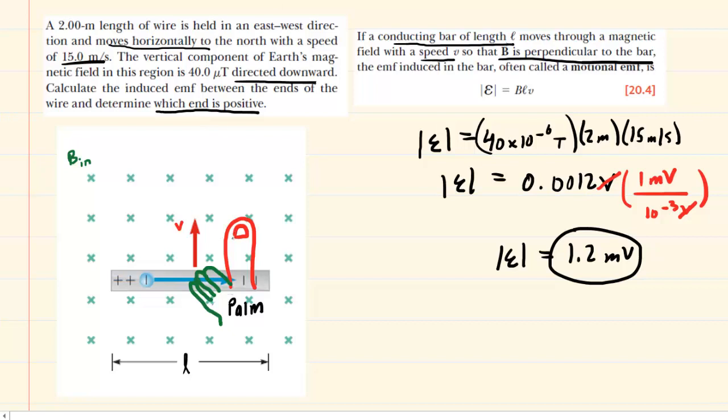You'll notice that my thumb, which I've colored in red, is pointing in the same direction as the velocity of the bar. And then my four fingers, which I've colored in green, are pointing in the same direction as the magnetic field, which is into the page. Those four fingers are supposed to be depicted pointing into the computer screen. When you do this, your palm should be naturally pointing to the left. Maybe you can mimic it with your own right hand, keeping it flat.